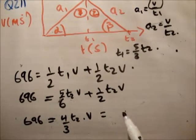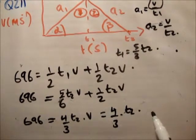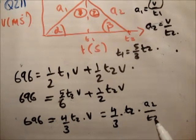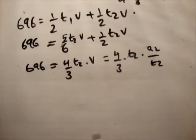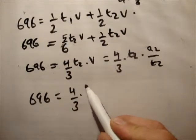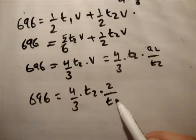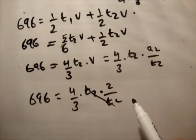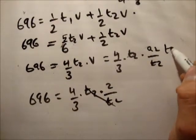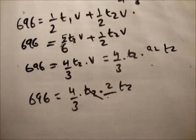696 is equal to 4 over 3 times t2 times v and v is a2 times t2. So you have 696 is equal to 4 over 3 times t2 times a2 which was 2, times t2.